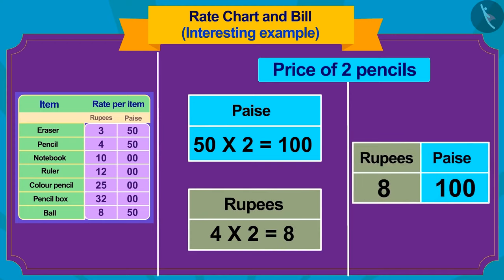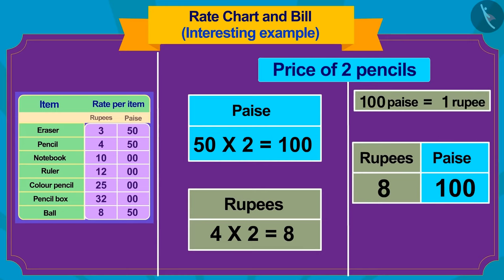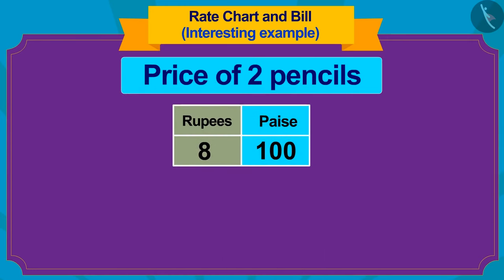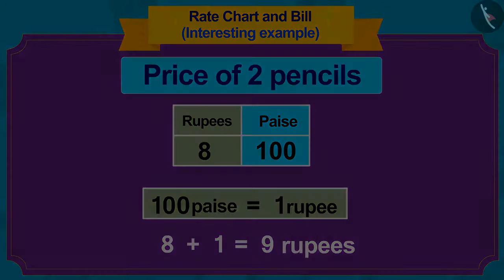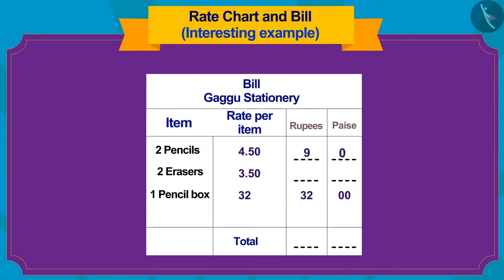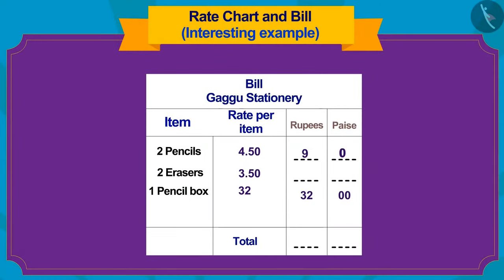But how much rupees is 100 paise? That's right — 1 rupee. Now if we add the paise and rupees together, the value of two pencils will be 8 plus 1, which is 9 rupees 0 paise. We will write it in the bill in this way.